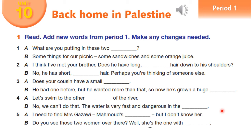Period 1, Activity 2. One: 'What are you putting in these two backpacks?' 'Some things for our picnic — some sandwiches and some orange juice.' Two: 'I think I've met your brother. Does he have long straight hair down to his shoulders?' 'No, he has short curly hair — perhaps you're thinking of someone else.' Three: 'Does your cousin have a small moustache?' 'He had one before, but he wanted more than that — so now he's grown a huge beard.' Four: 'Let's swim to the other side of the river.' 'No, we can't — the water is very fast and dangerous in the centre.' Five: 'I need to find Mrs. Ghazawi, Mahmood's wife, but I don't know her.' 'Do you see those two women over there? Well, she's the one with glasses.'